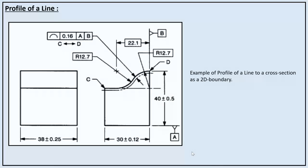Let us consider a component and take a 2D cross section of that particular component. Here we are trying to define profile of a line to a cross section as a 2D boundary. In the feature control frame, the profile of a line is given with 0.16 as the geometrical tolerance with respect to datums C and B. One peculiar feature of profile of a line is that we specify the extent of the surface between points C and D, which are the endpoints. The geometrical tolerance is within the component, which is 0.16 with respect to datums A and B.